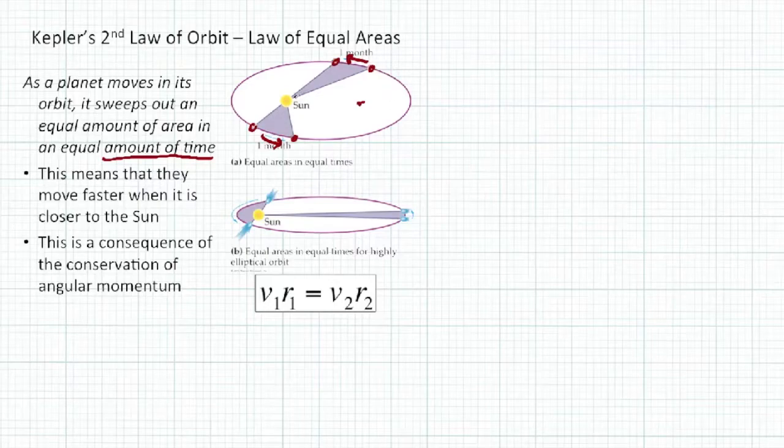What I mean is this area right here, as the Earth sweeps through that, moves from here to here over the course of a month. If we take that same amount of time over here, 30 days, even though it's closer, it's going to be moving actually faster, such that the area it sweeps out is exactly equal. The same amount of time means the same amount of area swept out.